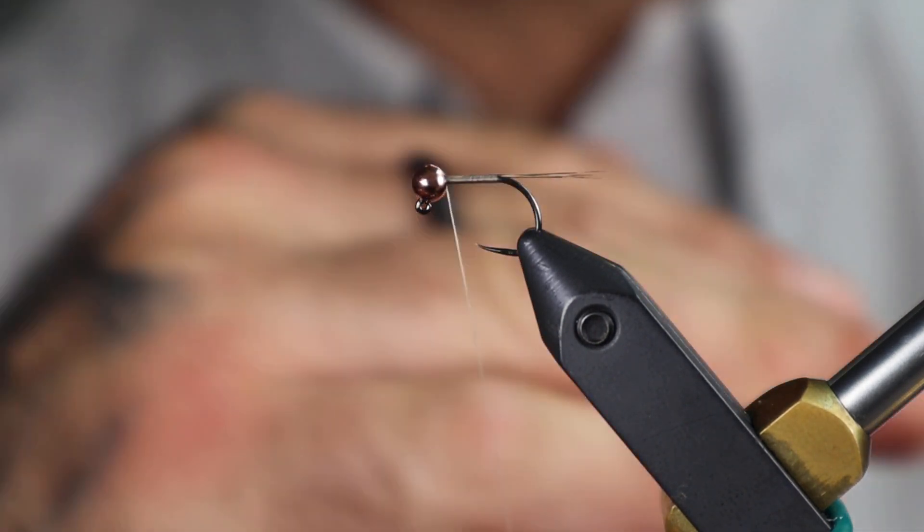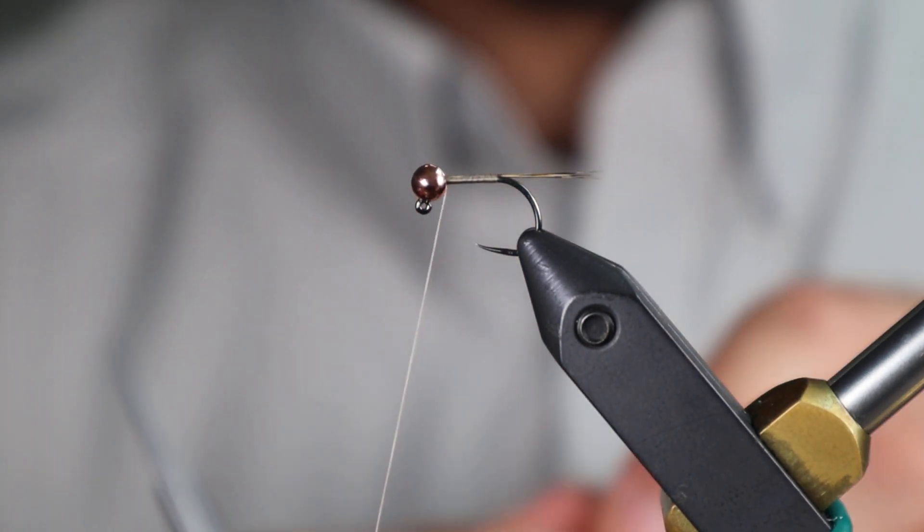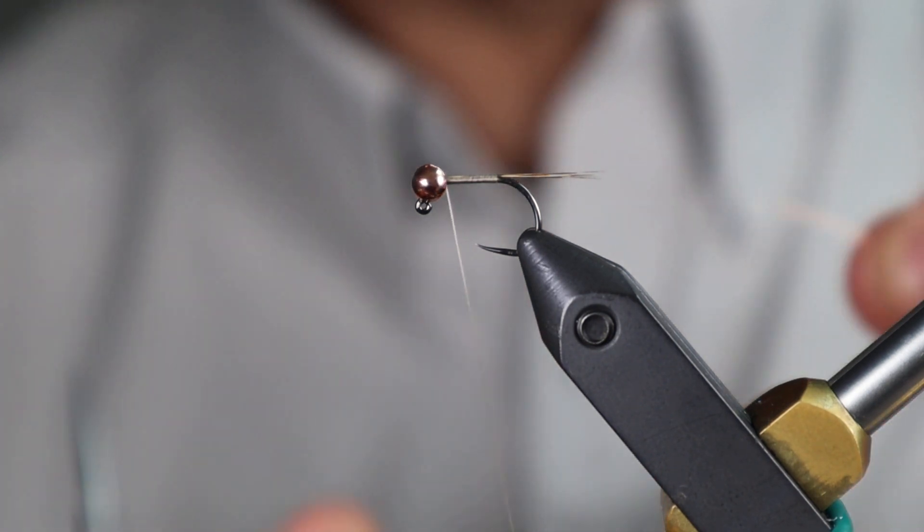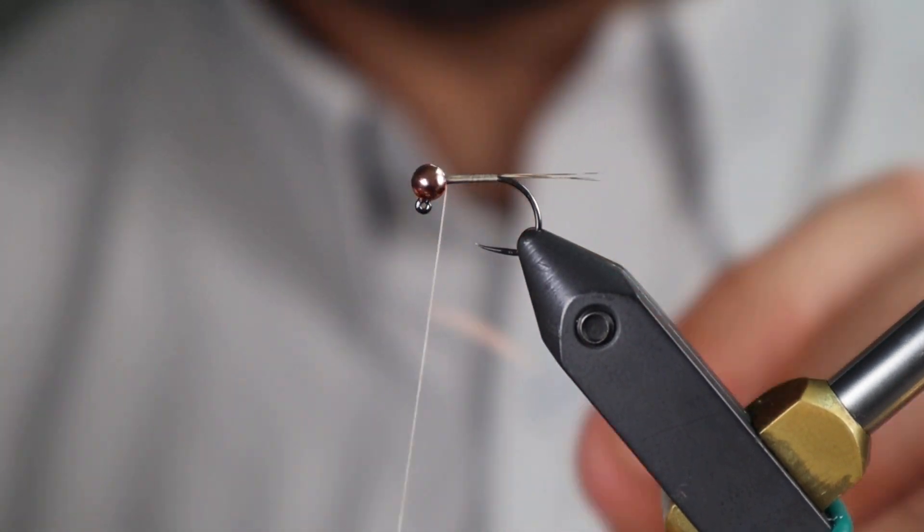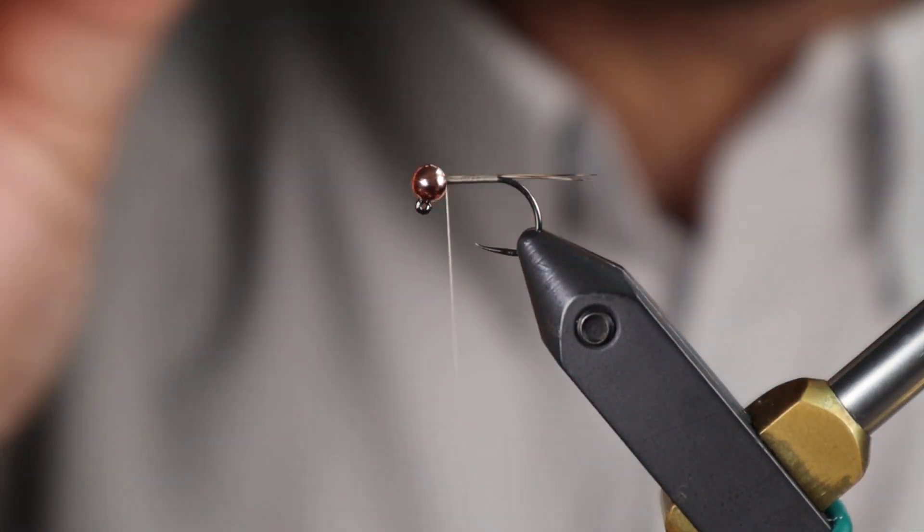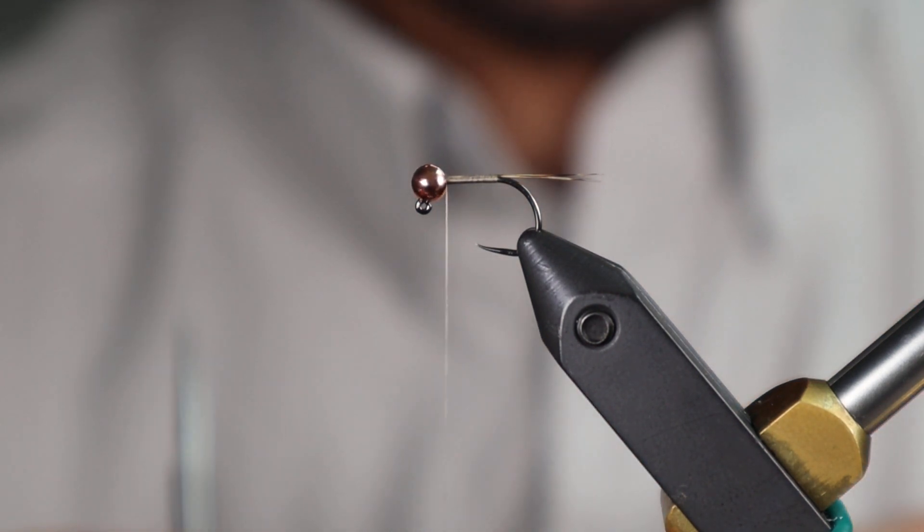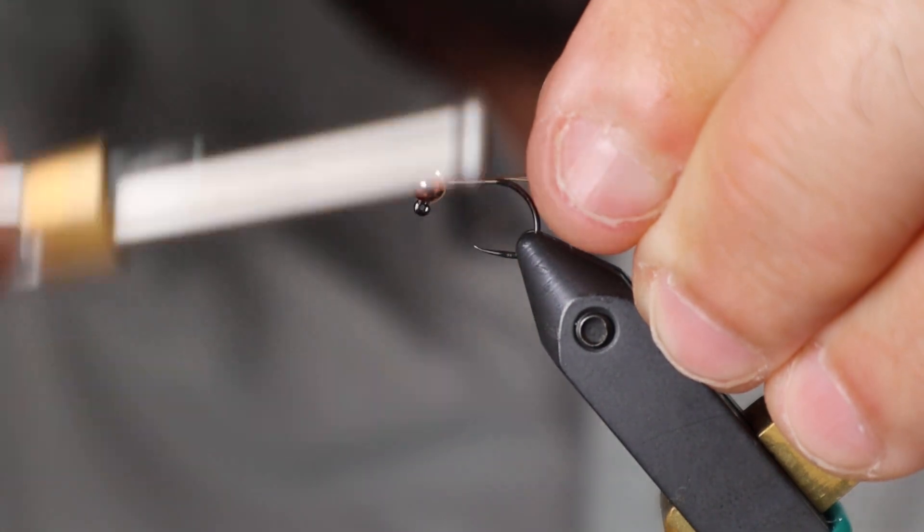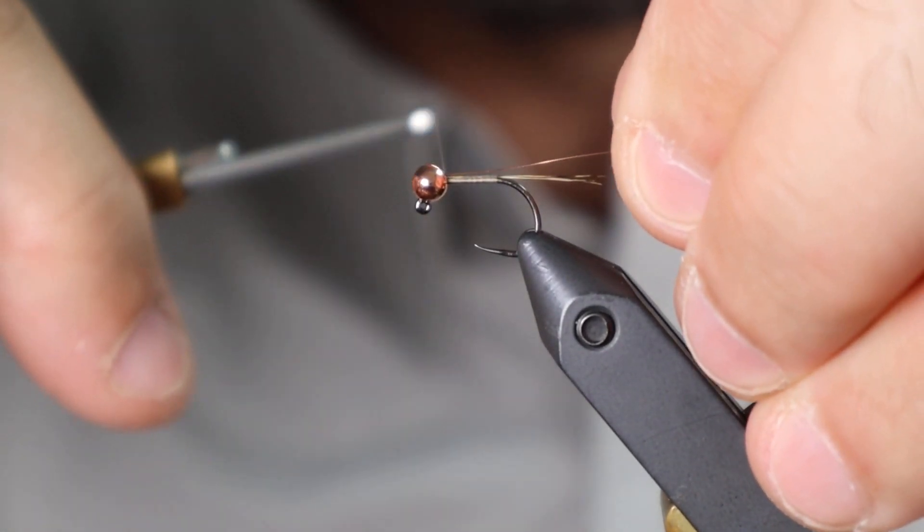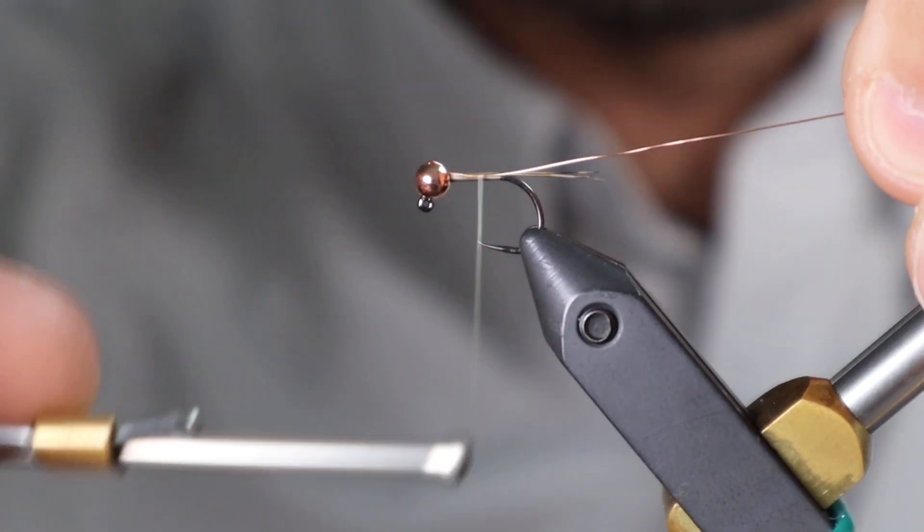Second material is going to be the rib. The rib for this, I keep it simple. I like to match the color of the bead, so copper bead, I'm using size small copper wire. Obviously gold, I would use gold; silver, you can use silver. I don't think it really matters, but it's just how I like to do it. I'm going to stick the end of the wire in the slot of the bead, and I'm going to take the wire down the far side of the hook.